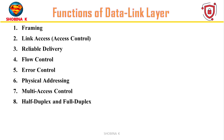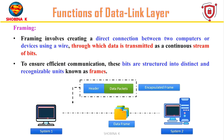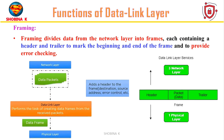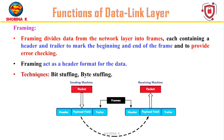First, framing. Framing is a point-to-point connection between two devices that consists of a wire in which data is transmitted as a stream of bits. These bits are structured into identifiable chunks of information known as frames. Framing divides data from the network layer into frames, with each frame containing a header and trailer to mark the beginning and end of the frame, providing error checking. So framing acts as a header format for the data.